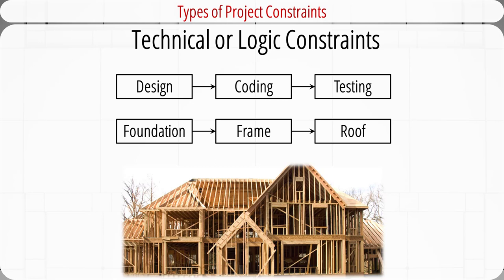For example, when writing a software program, three activities should be carried out in sequence: designing the program, coding, and testing. Another example, when building a house, three activities should happen in sequence: establishing the foundation, building the frame, and mounting the roof.